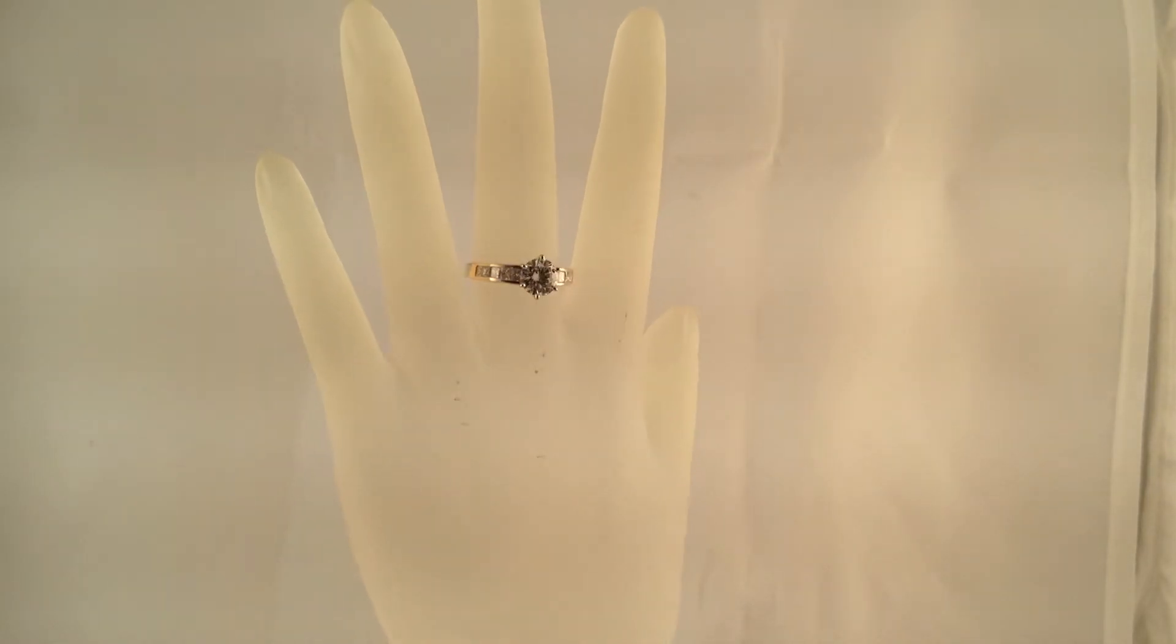All of the diamonds set in the ring are 100% genuine and natural. The center diamond is exactly 1.01 carats, weighed out of the mounting and reset. It is set in a six-prong white gold head. The main diamond is beautiful, VS2 in clarity and H in color.